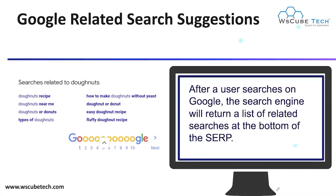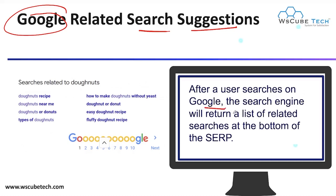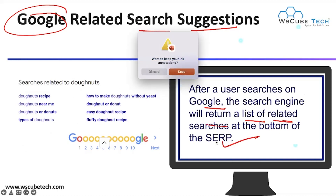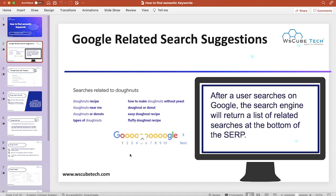To find your semantic keywords — your related keywords — we can use Google Related Search Suggestions. After a user searches on Google, the search engine returns a list of related searches at the bottom of the search page. Let me show you how you can figure this out.